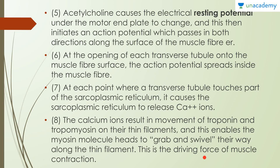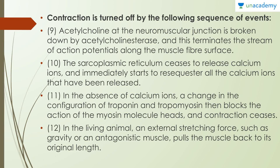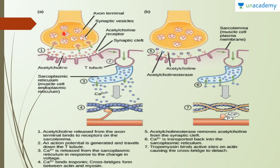The movement of troponin and tropomyosin enables the myosin molecule heads to grab and swivel their way along the thin filament — this is the driving force of muscle contraction. Now let's diagrammatically understand how contraction is brought about. We have an axon terminal, synaptic vesicles, and acetylcholine receptors on the motor end plate. The acetylcholine is secreted and enters the synaptic cleft, where it binds with its receptors. At the T-tubule in contact with the sarcoplasmic reticulum, calcium ions are secreted, and the myosin head comes in contact with actin.